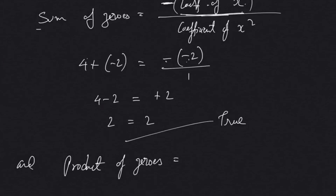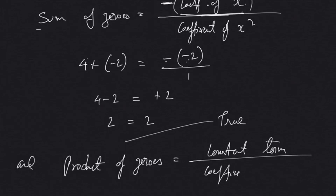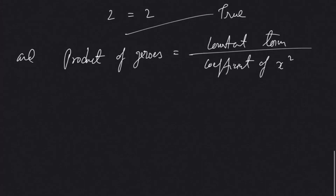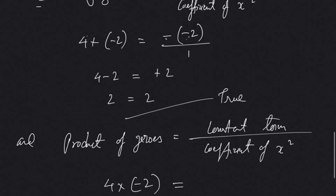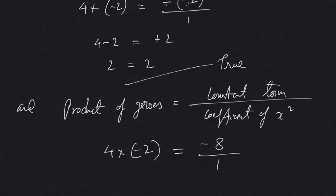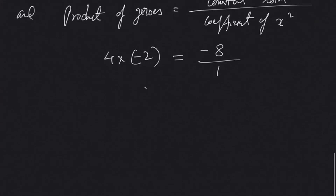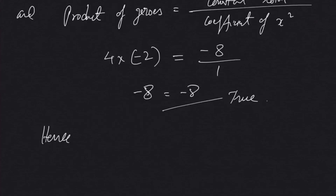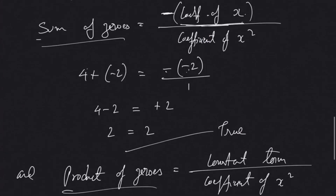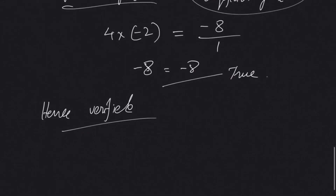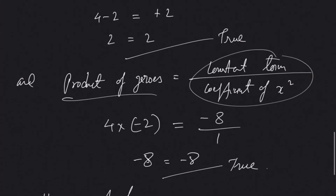Verifying the product of zeros: product = constant term / (coefficient of x²). Our zeros are 4 and -2, so 4 × (-2) = -8. The right-hand side: -8 / 1 = -8. Both sides equal -8, so the second relationship — product of zeros — is also verified. Both relationships between the zeros and coefficients are confirmed.